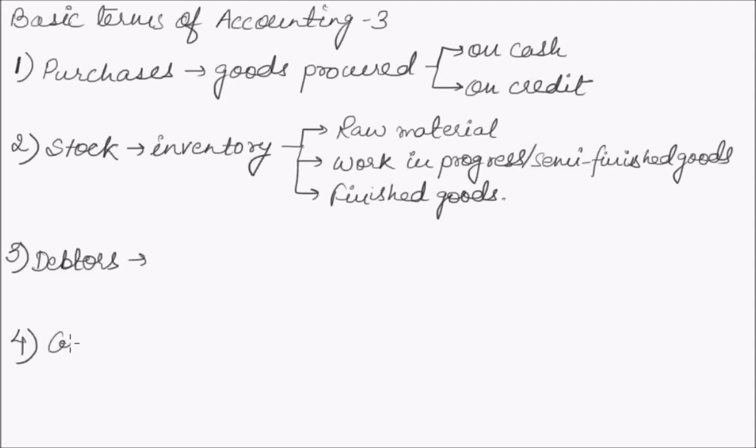Finally, we will understand creditors. Creditors are persons or other entities who have to be paid by an enterprise an amount for providing the enterprise goods and services on credit. The total amount standing in favor of such persons or entities on the closing date is shown in the balance sheet as sundry creditors on the liability side.